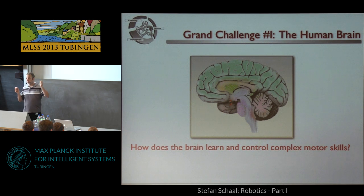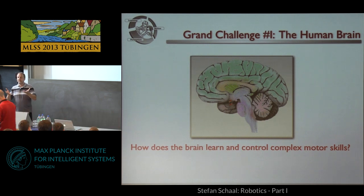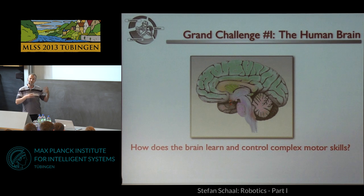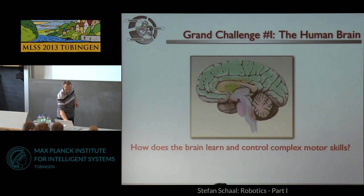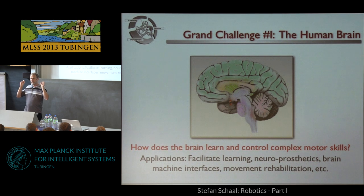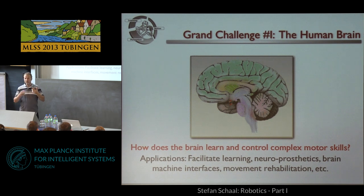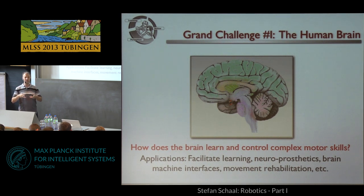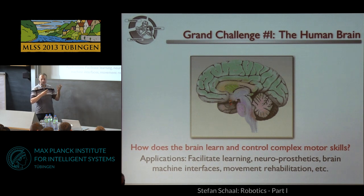In my world, I'm interested in motor control — what does the brain do in motor control and how does it actually do it? All of you work really well. Our robots don't — that's the problem. So it would be nice to understand how this thing works so we can replicate it. Besides just the pure scientific interest, there are lots of very practical applications. If you understand the brain, you might be able to personalize learning, facilitate motor skill learning, create really cool neuroprosthetics, brain-machine interfaces, and move into rehabilitation.